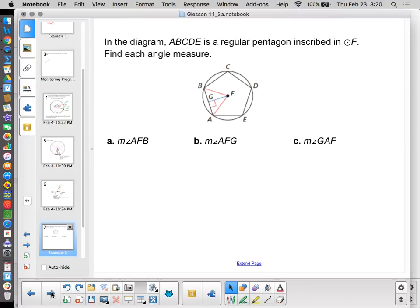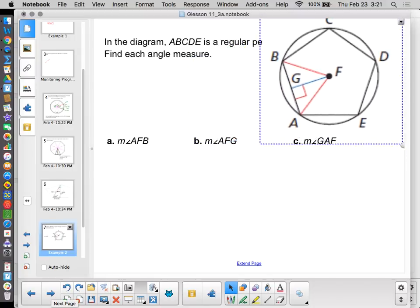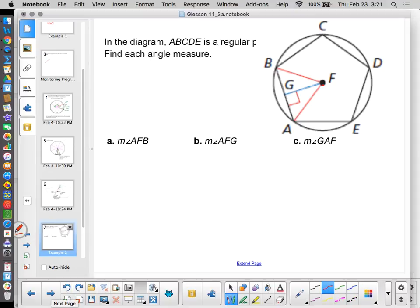But for today, we aren't going to start solving the triangles yet. That's more of a topic for tomorrow. For today, I'm more concerned with just identification. So in the diagram, ABCDE is a regular pentagon inscribed in triangle F. Find each angle measure. Let's take a look at our picture. I'm going to expand my picture a little bit, move it over here so we can see it a little bit better. And it wants us to find certain things. Well, it's a pentagon. So how many isosceles triangles do I have here? I have five isosceles triangles.